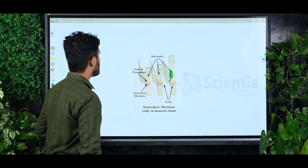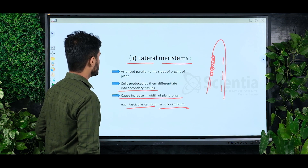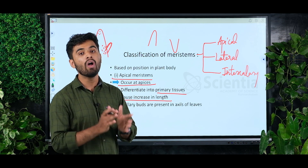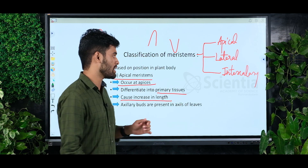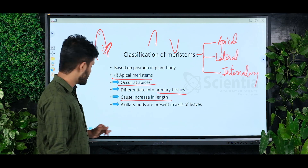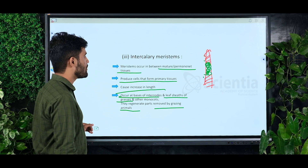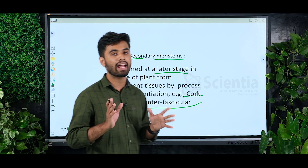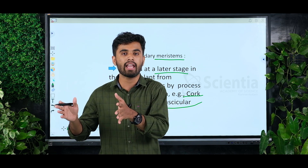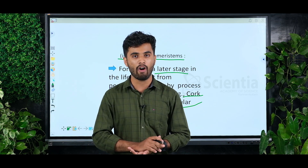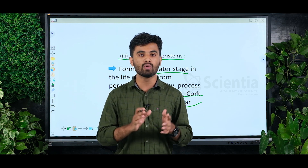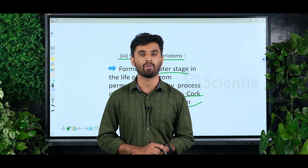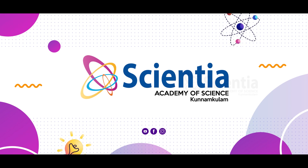So to summarize, the meristematic tissues include apical meristem, lateral meristem, and intercalary meristem. Primary meristem and secondary meristem have been covered. I think the concept of meristematic tissues is clear for you. We will continue in another class. Thank you guys for watching.